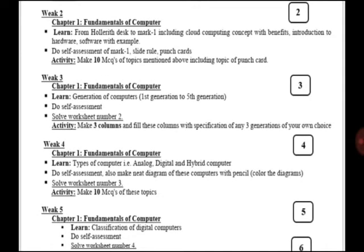In third week, you will cover generation of computers from first generation to fifth generation. After completion of this task, you will do self-assessment and complete worksheet number two. There is an activity where you will make three columns and fill these columns with specifications of any three generations of your own choice.